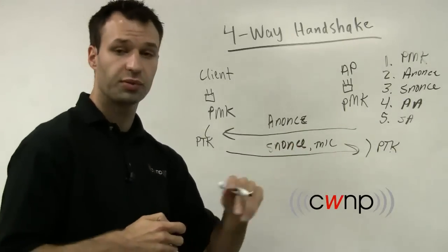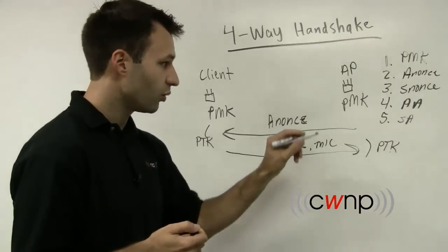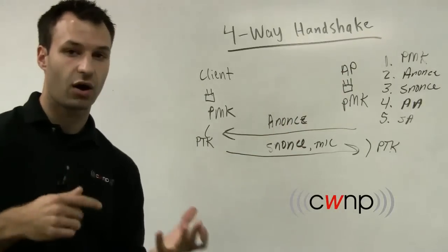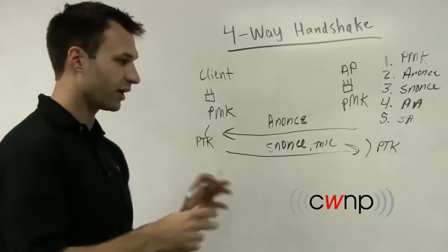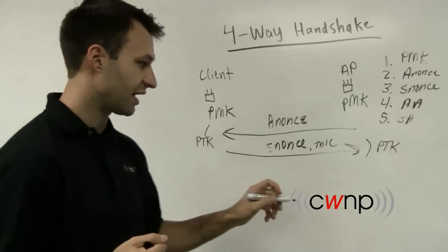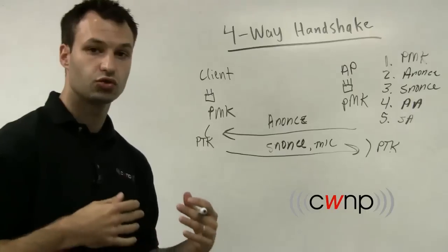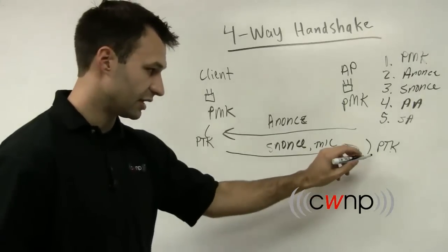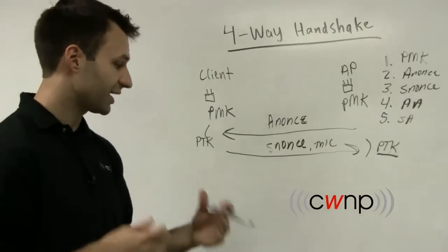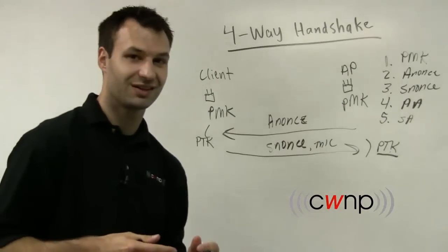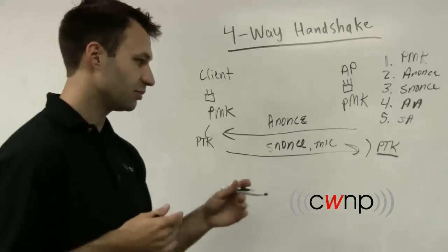Of course, they also need group encryption keys, which the access point is going to calculate on its own, aside from the authentication or the four-way handshake process. And it's going to derive this GTK, a group temporal key. And if I didn't mention it already, PTK is for pairwise transient key. So we have a pairwise transient key and a group temporal key, PTK and GTK.